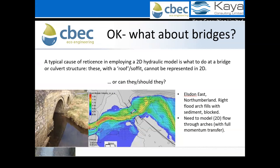A key question is how to handle bridges in 2D models. One benefit of 1D models is specific routines and equations for culverts and bridges, so there's reticence in using 2D models for this purpose. However, in many cases, especially for large span bridges, you don't necessarily get fully pressurized flow, and the bridge structure can be represented in 2D. We should also bear in mind that many bridge equations in 1D models were calibrated on road bridges — often not even UK-based — such as the USBPR bridge routines. There is a question of whether these 1D routines are fully applicable to UK examples.